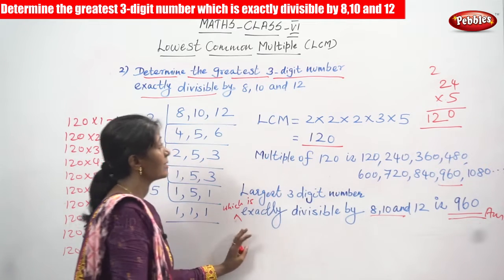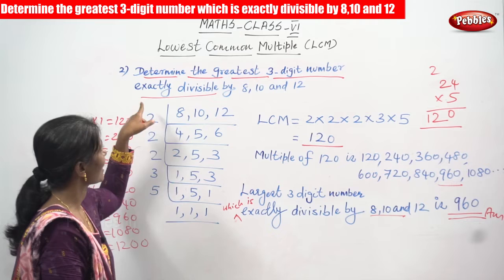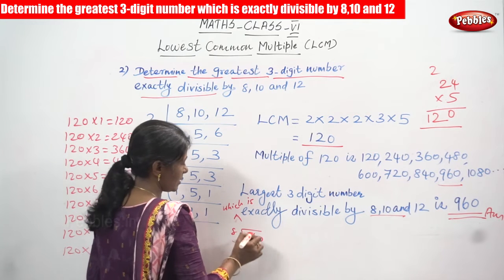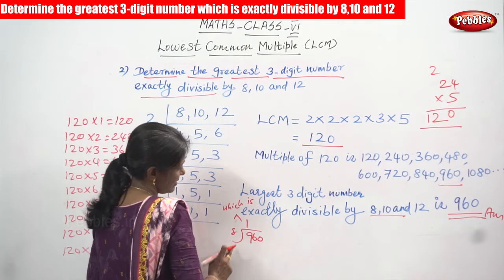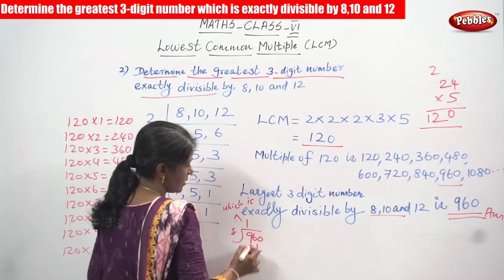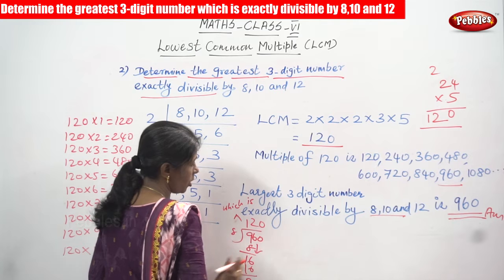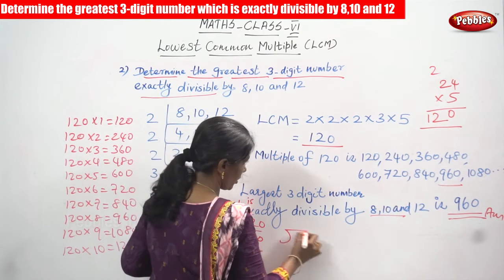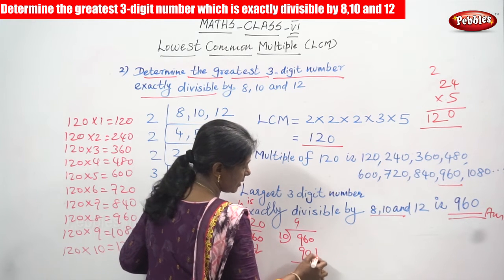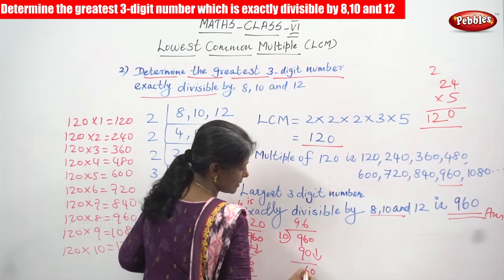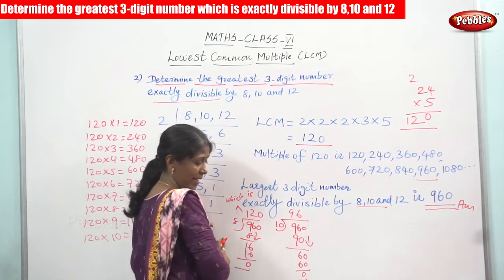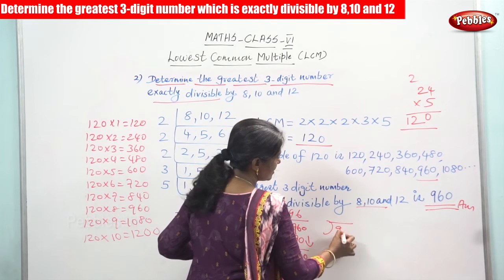Let's verify this. 960 divided by 8: 1 × 8 = 8, bring down 6 to get 16, 2 × 8 = 16, remainder 0; quotient is 120 with remainder 0, so 960 is divisible by 8. Next, 960 divided by 10: 9 × 10 = 90, remainder 6; bring down 0 to get 60, 6 × 10 = 60, remainder 0; quotient is 96 with remainder 0, so 960 is divisible by 10.